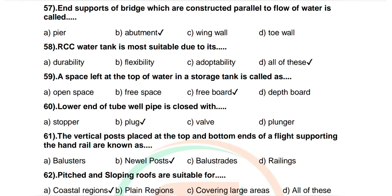Question number 60: Lower end of tube well pipe is closed with. Options are stopper, plug, valve, plunger. Correct answer: plug.